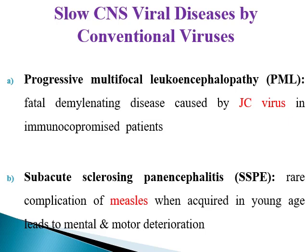Another form is called subacute sclerosing panencephalitis. Panencephalitis means it involves all of the brain, not just certain areas, and there is some inflammation. This is a rare complication of measles virus when acquired at a young age, and it usually leads to mental and motor deterioration. It has decreased markedly after the wide application of the measles vaccine.